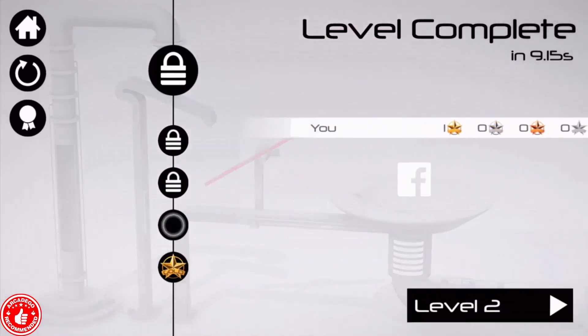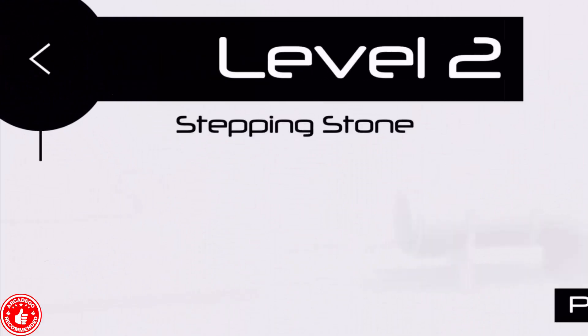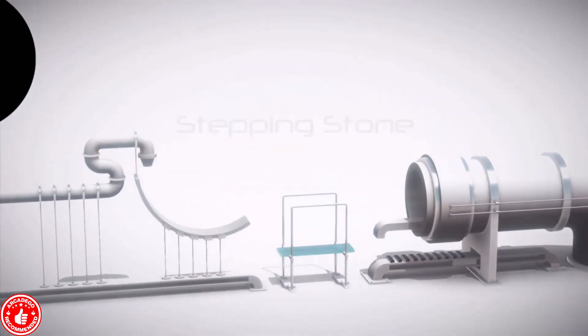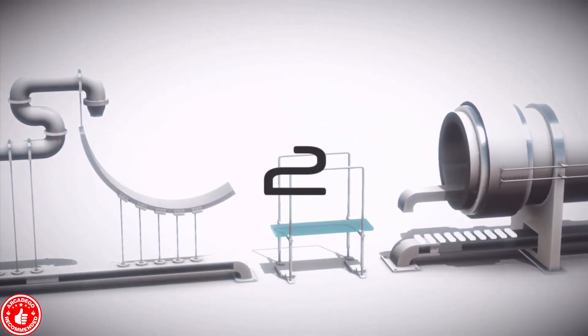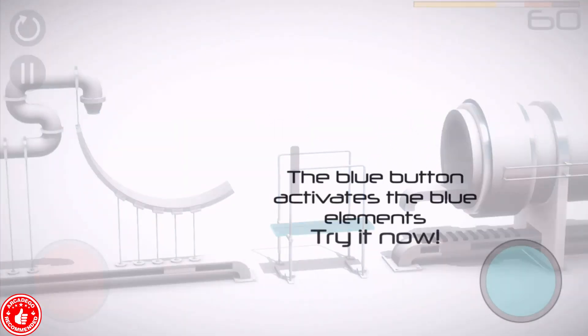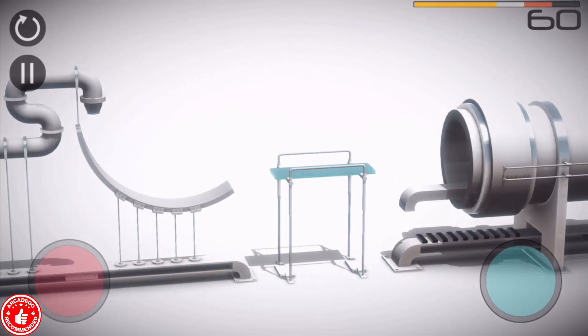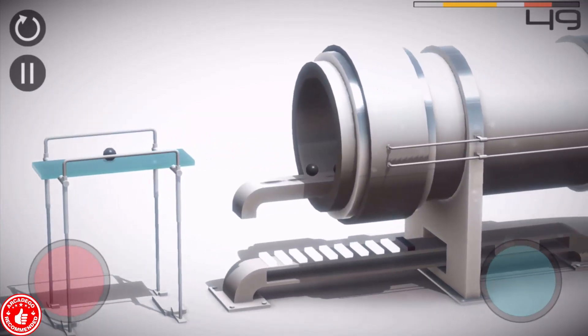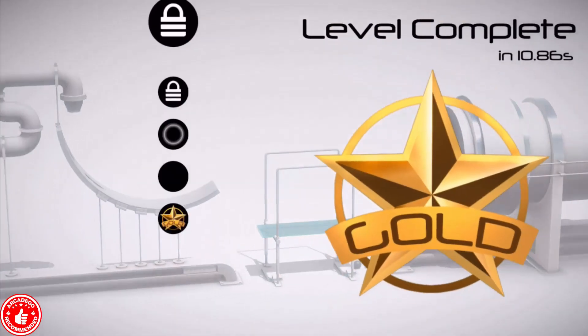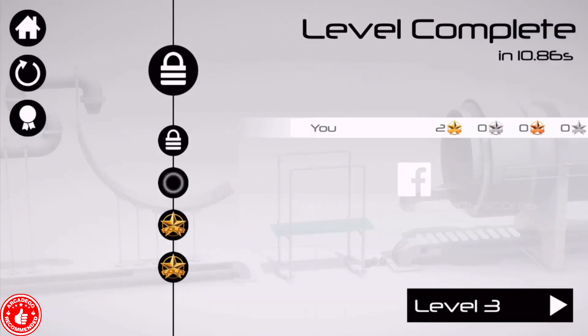So here goes level 2, stepping stone. 3, 2, 1. The blue button activates the blue element. Try it now. So this is like some science. They're saying elements. I can't comprehend. So there we go. We got some balls inside. That's the last one. Basically, that little bar on the bottom tells you how many balls you need to get in there. So level 3.